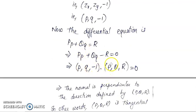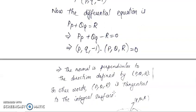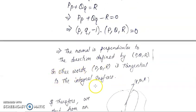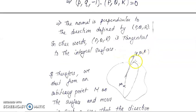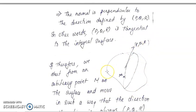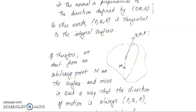So (p, q, -1) is the normal vector and (P, Q, R) is the tangential direction corresponding to the integral surface. Therefore, (P, Q, R) will be the tangential direction to the integral surface. Now I choose any arbitrary point M on the surface. At the point M, you move in the tangential direction — consider the tangential direction.